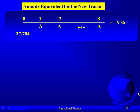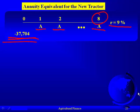The annuity equivalent for the new tractor: we're going to take the net present value. The net present value we calculated for the new tractor was negative $37,704. We know the real rate is 9%. What we're trying to find is the annuity over the life of this new tractor that makes it equivalent to the net present value — so that we have an annuity equivalent to the net present value.